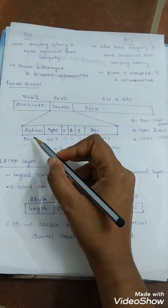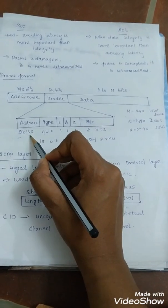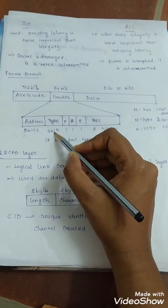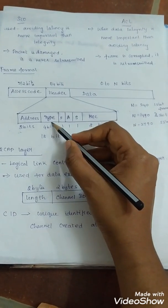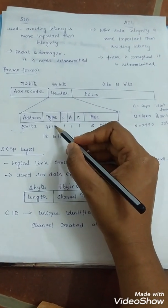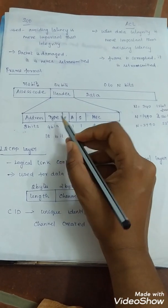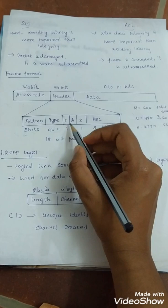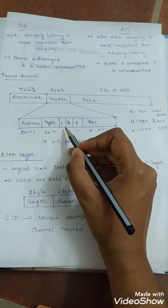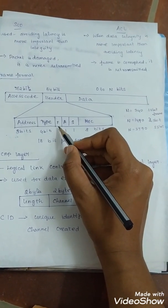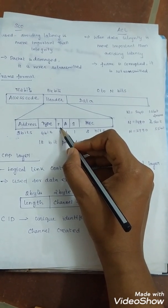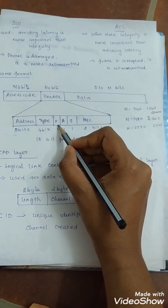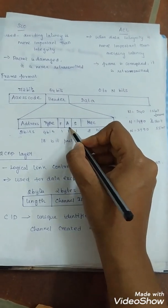Next one: type. It is a four-bit subfield which defines the type of data coming from upper layers. Then F is the flow control, indicating if the buffer is full or not. It indicates the receiver is not able to receive more frames.